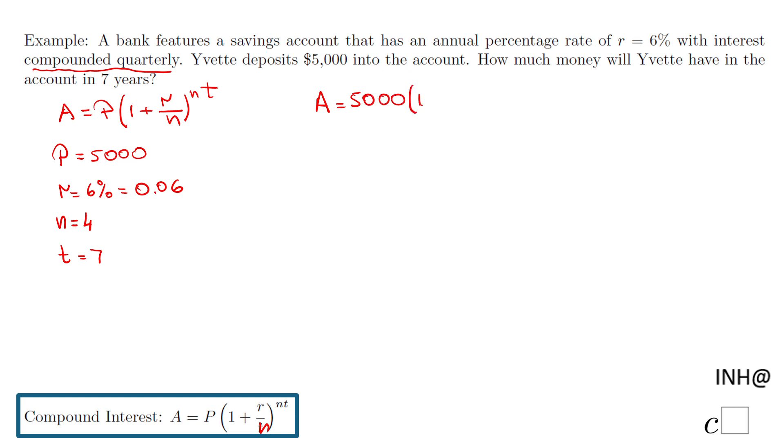I'm going to have A equals 5,000 times one plus 0.06 over n, which is 4, to the power of nt.